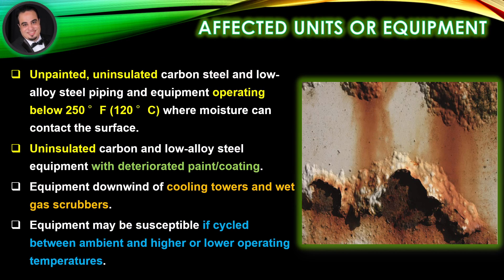Affected units or equipment include unpainted, uninsulated carbon steel and low alloy steel piping and equipment operating below 250 degrees Fahrenheit where moisture can contact the surface. Uninsulated carbon and low alloy steel equipment with deteriorated paint coating, and equipment downwind of cooling towers and wet gas scrubbers, may also be susceptible if cycled between ambient and higher or lower operating temperatures.